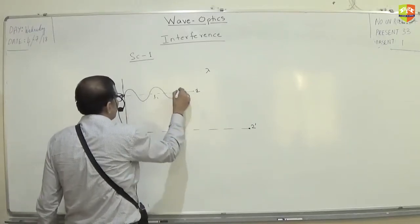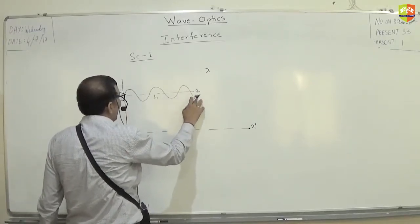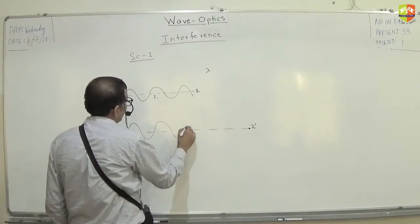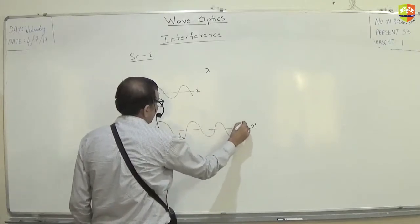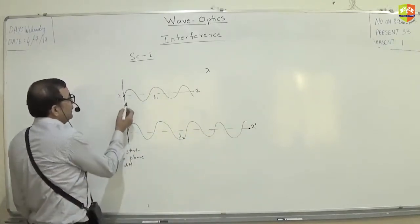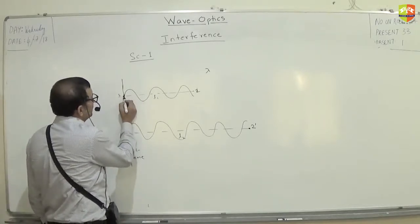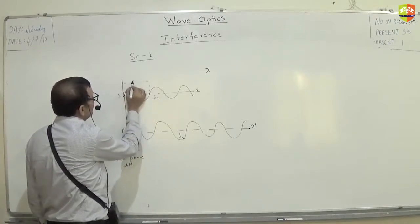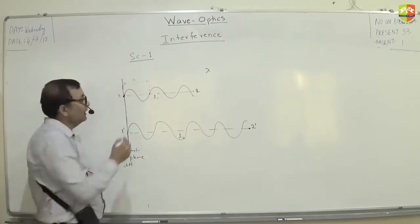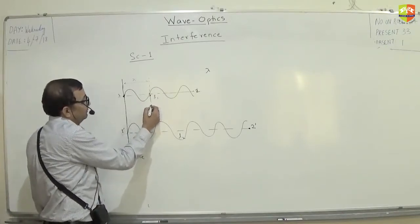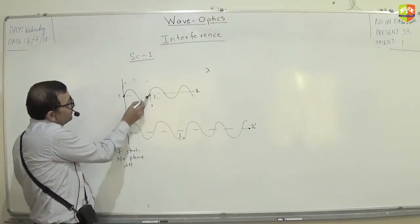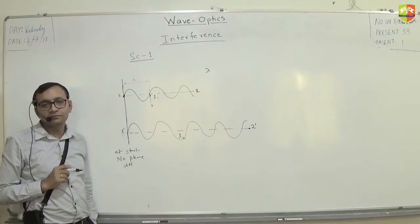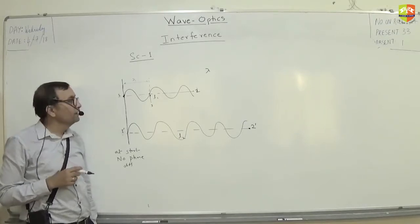Suppose this is a 1D wave. If you are travelling one wavelength — suppose this is point 1 — you have this distance as one wavelength. Now let's say this is point 3. What is the phase difference between point 3 and point 1?